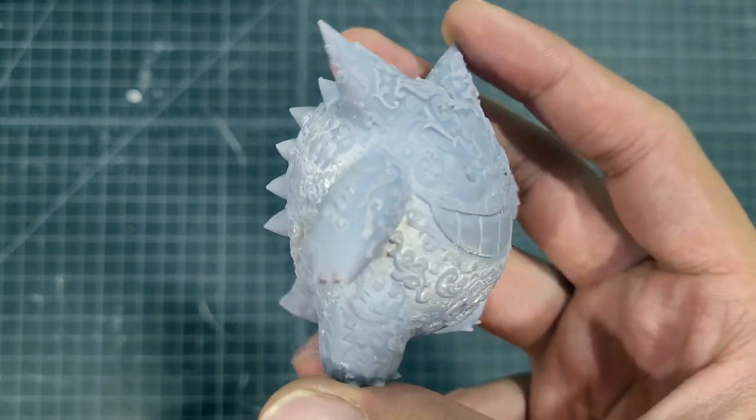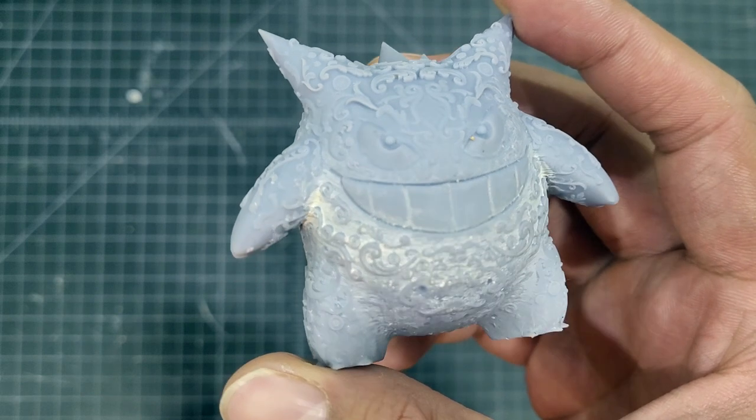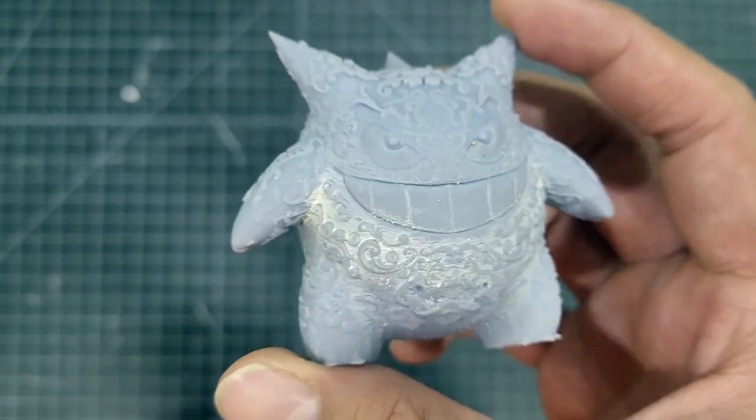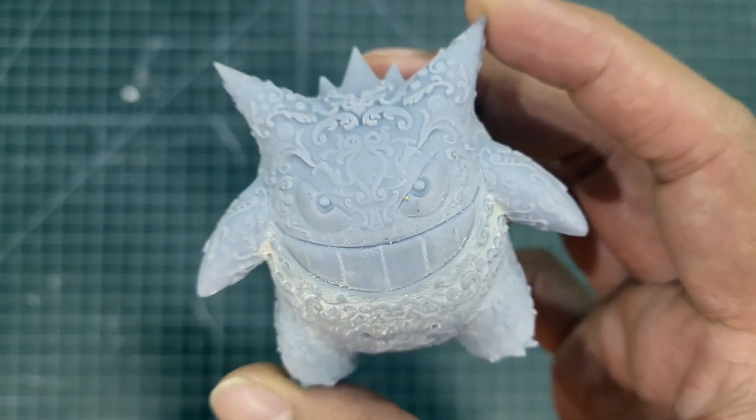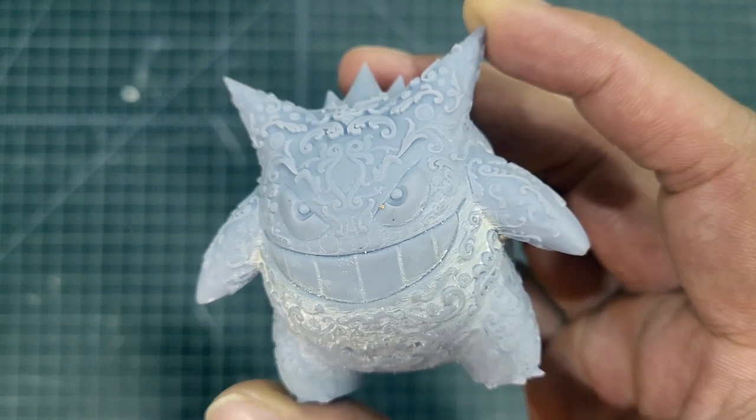While I was at it, I tried to clean up this 3D printed Gengar by Psy Wizard, also known as Filament Folly, that I messed up when I started resin 3D printing about a year ago.